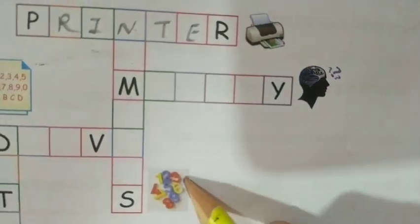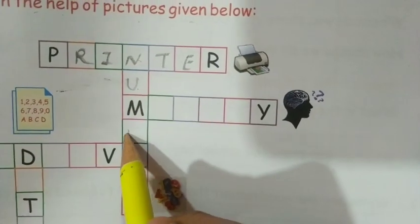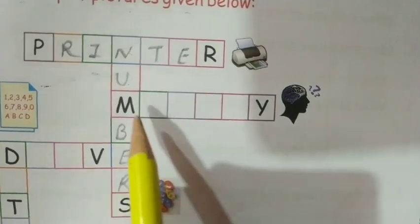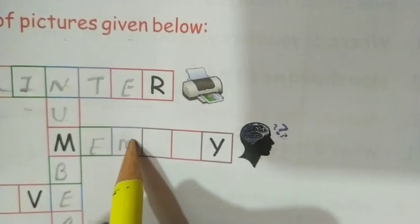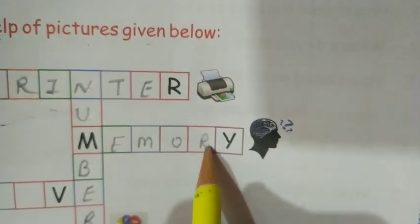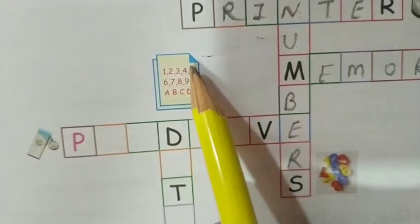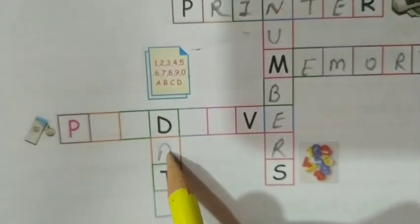The next answer going down is 'numbers': N-U-M-B-E-R-S. Third one — this represents our brain, our memory. So the answer is 'memory.' Next picture shows numbers, alphabets, and other data, so the answer is 'data.'